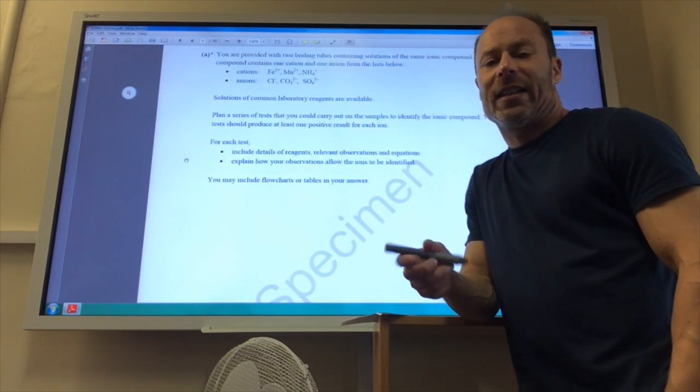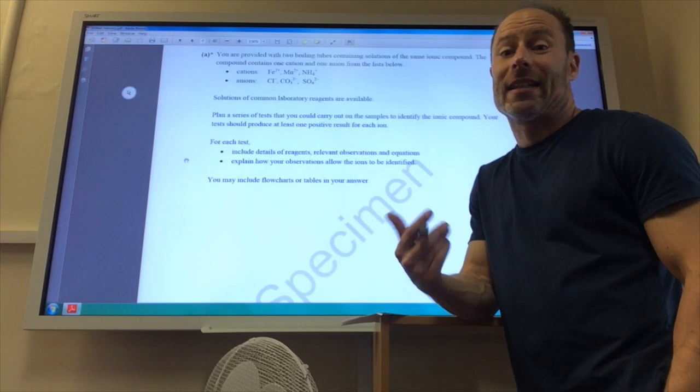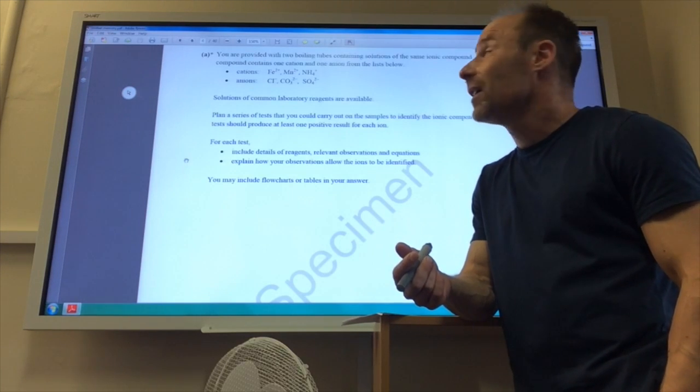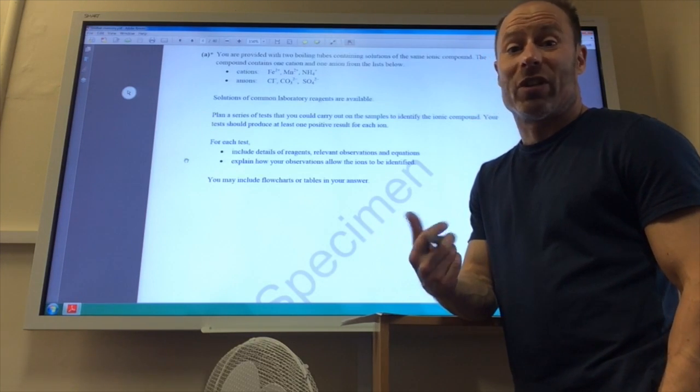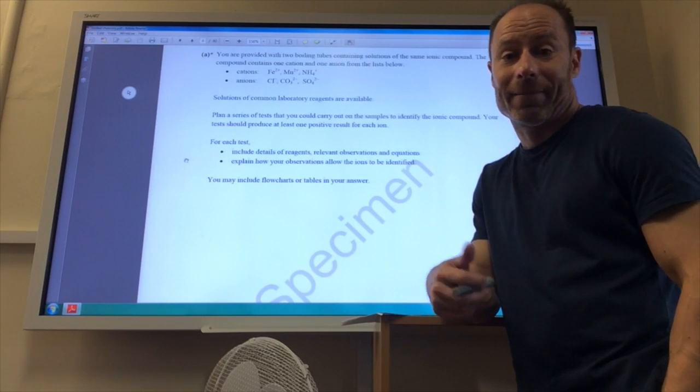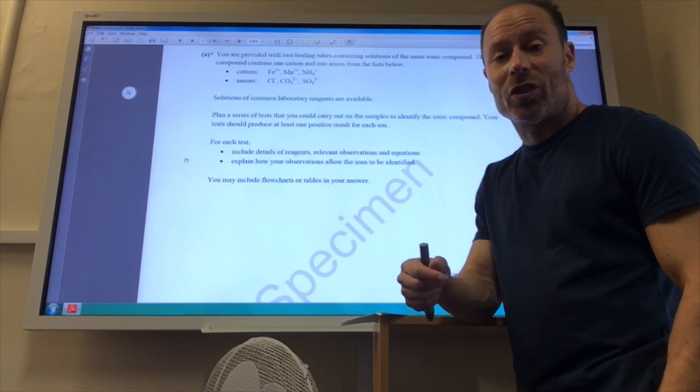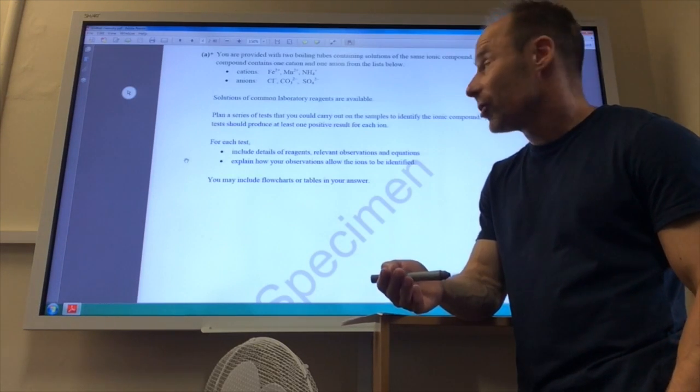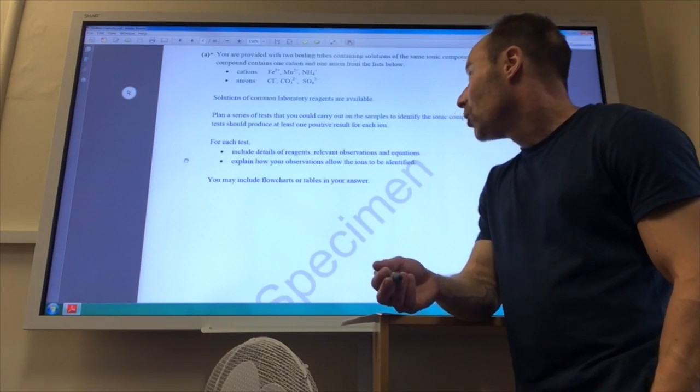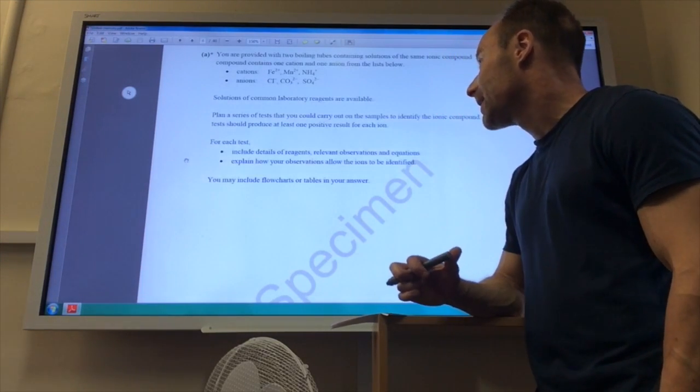Question 2A. This is one that really, if you know your notes, is easy peasy lemon squeezy. Because all you're doing is running through all the tests for your cations and anions. Let's deal with cations first. For all three of those, you can use sodium hydroxide solution.